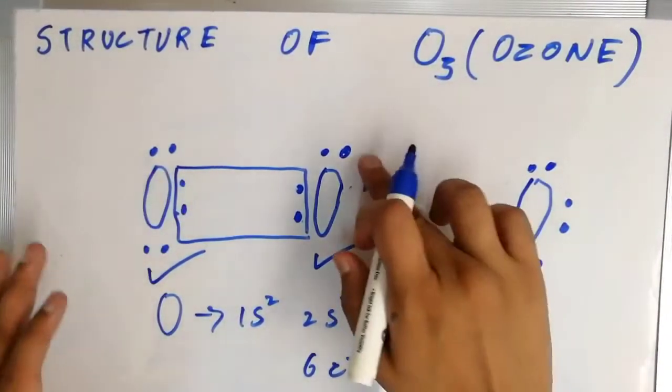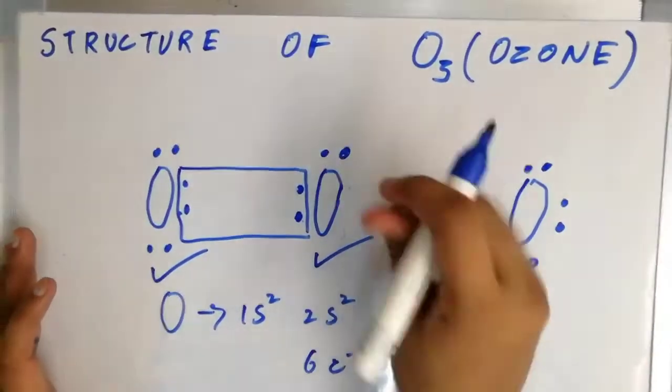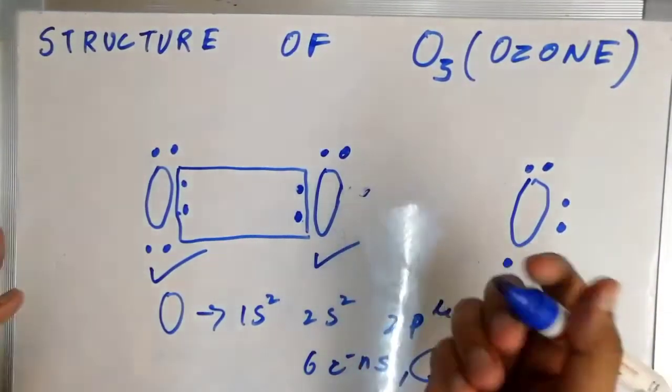So in these cases what actually happens is a coordinate bond is formed.